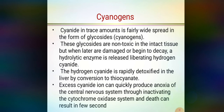The liver detoxifies the hydrogen cyanide by converting it to thiocyanate, making it harmless for the body. But when excess cyanide is provided to the body, it produces anoxia in the central nervous system and inactivates the cytochrome oxidase system. This system is part of the electron transport chain in the respiration process, where cytochrome oxidase enzymes play a very important role. Cyanide attacks these cytochromes, disrupting the electron transport chain so proper oxygen is not supplied, and death can occur instantly. Cyanogens are quite harmful to our body.